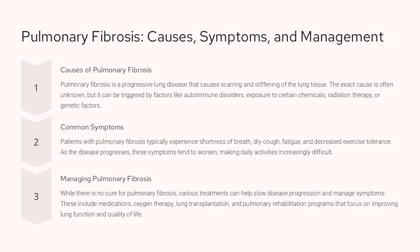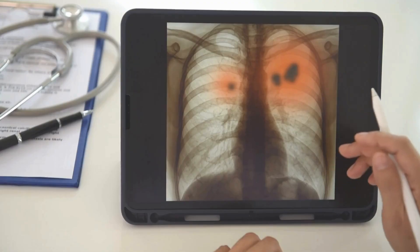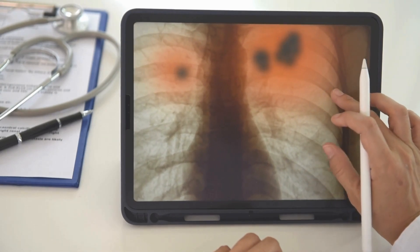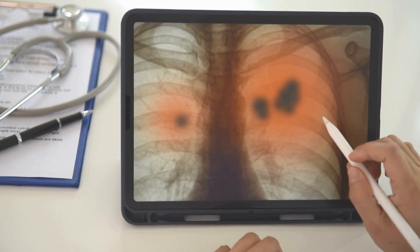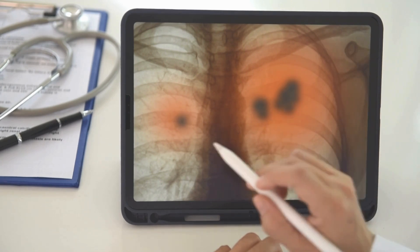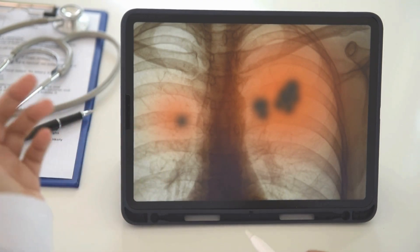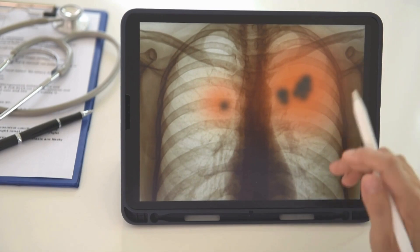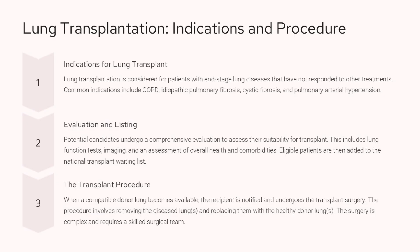Pulmonary fibrosis is a progressive lung disease that leads to scarring and stiffening of the lung tissue. The exact cause is often unknown, but it can be triggered by autoimmune disorders, chemical exposure, radiation therapy, or genetic factors. Patients typically experience shortness of breath, dry cough, fatigue, and decreased exercise tolerance, with symptoms worsening as the disease progresses, making daily activities increasingly difficult. While there is no cure, various treatments can help slow disease progression and manage symptoms, including medications, oxygen therapy, lung transplantation, and pulmonary rehabilitation programs.